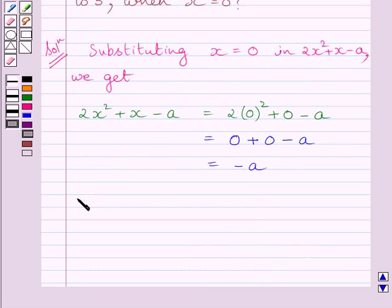So we get the value of 2x squared plus x minus A is equal to minus A when x is equal to 0.